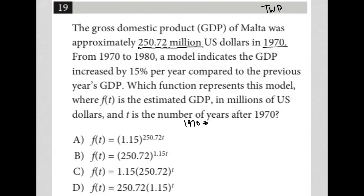1970 250.72 million. The next sentence says from 1970 to 1980, a model indicates the GDP increased by 15% per year compared to the previous year's GDP. 1970 to 1980, we have 15% increases. I'll just say plus 15% per year.